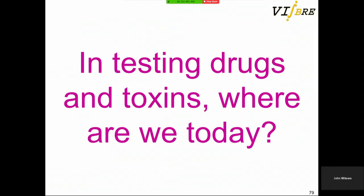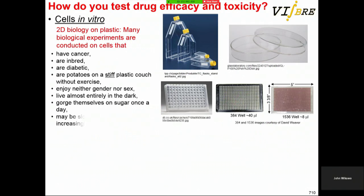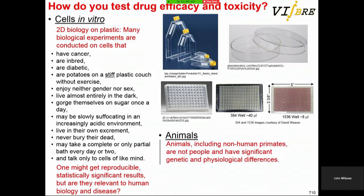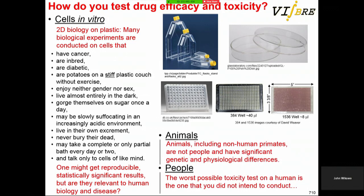Where are we today in drug toxicity testing? Today, 2D biology on plastic has well-known problems. Even though you have cancerous inbred diabetic cells, you can get reproducible statistically significant results. If instead you go to animals, they are not people and have genetic and physiological differences. And toxicity tests in people are not wise, particularly if you didn't intend to conduct them.